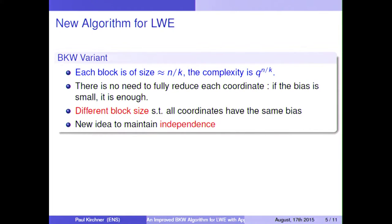But it was observed before that there is no need to fully reduce each coordinate if the secret is very small, and in particular binary. And so what we only need to have is a small bias for each coordinate.